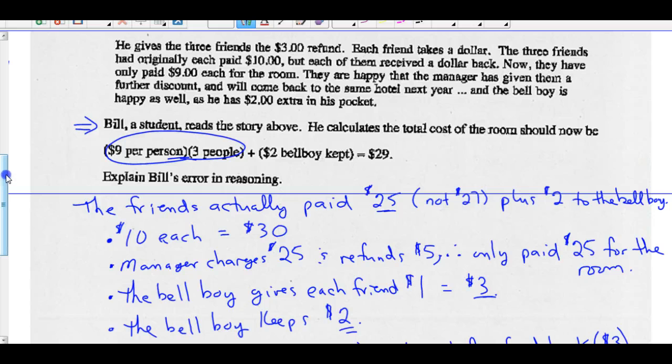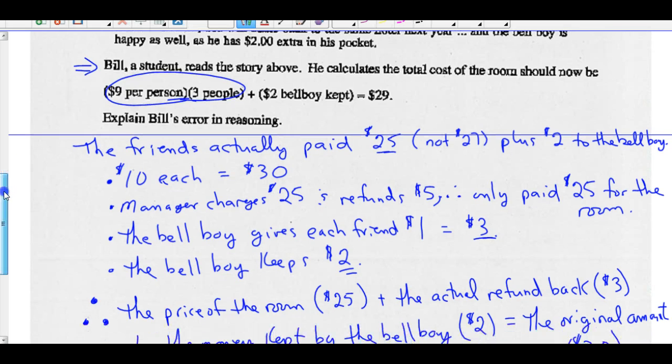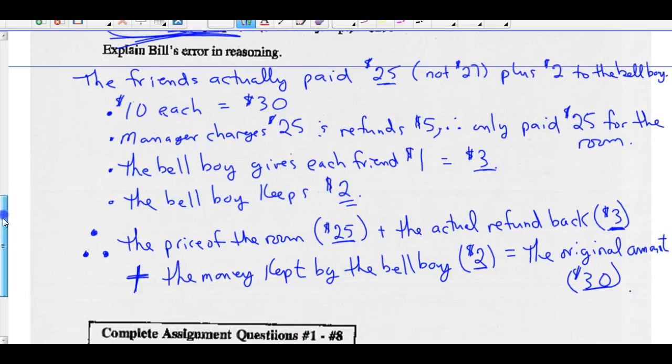So if we look what's happened, the price of the room was $25. That's what the manager charged them. And the actual refund back to the friends, each guy got $1. So that's $3. So $25 plus $3 is $28. And we add to that plus the money kept by the bellboy, which is $2. So $25 plus $3 plus $2 is the original $30. So this is a misdirection here. So that's a common mistake.